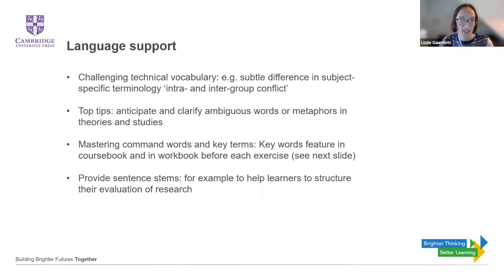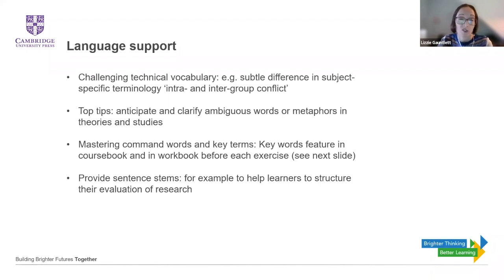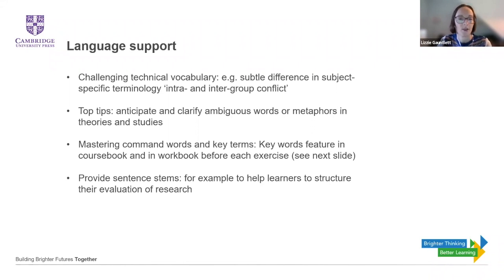Here are some approaches I've put on the slide. In terms of challenging technical vocabulary, we've got to look out for those subtle differences and anticipate things that learners might struggle with or confuse. For example, in social psychology and organisational psychology, we might use the terms intra- and inter-group conflict or tensions. There are very subtle differences to some learners approaching that for the first time. My tip would be to try to anticipate and clarify what those ambiguous words or metaphors in the theories and studies from the syllabus might be.